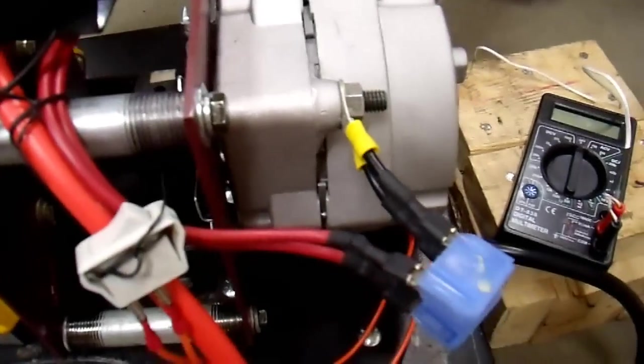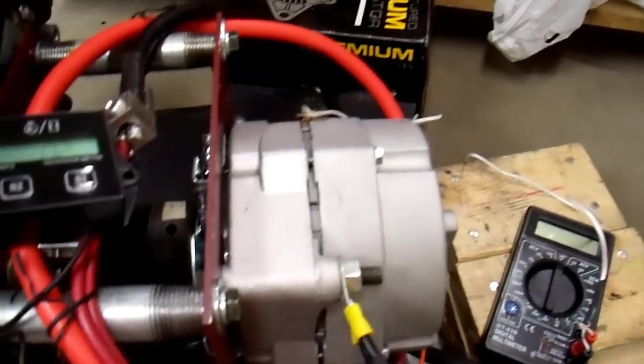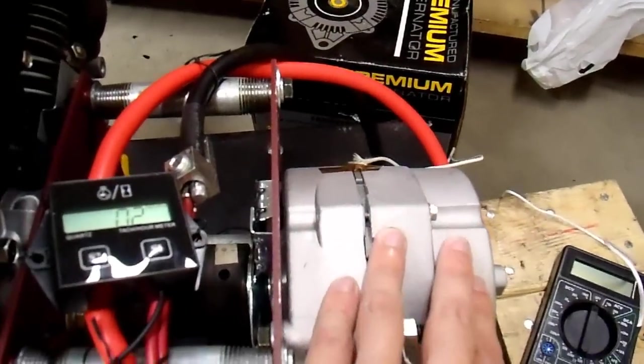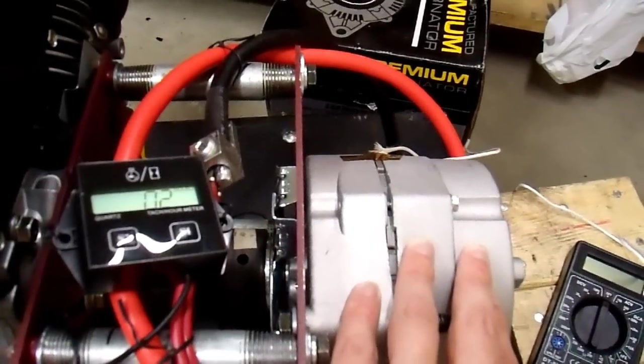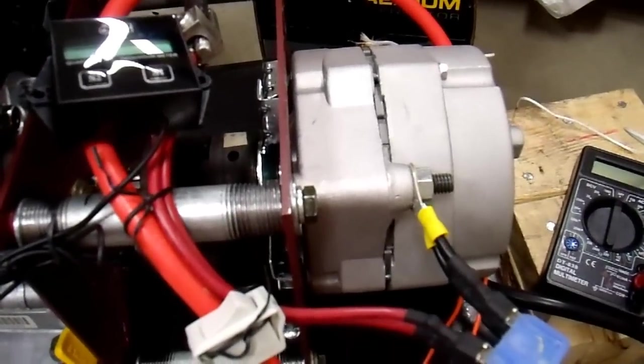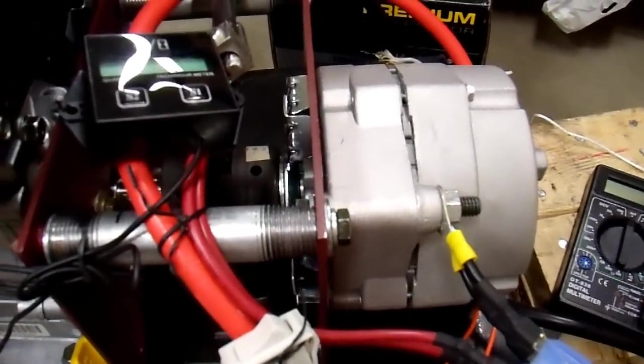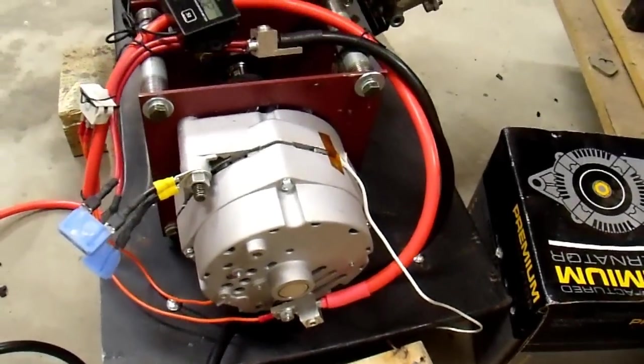So this particular alternator, this 10SI high output alternator, cannot withstand more than about 60 amps continuous. And that's interesting because GM designed this 10SI to do up to 63 amps and I'm sure that number is not by accident. It was engineered and 63 amps is what it was engineered for.